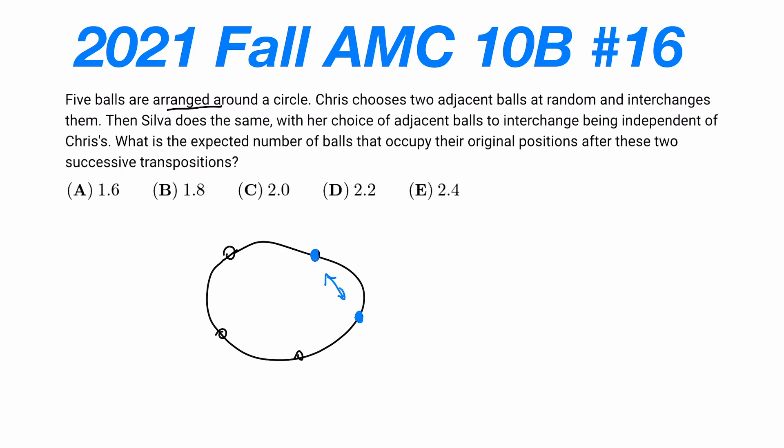Then Silva does the same, with her choice of adjacent balls to interchange being independent of Chris's. What is the expected number of balls that will occupy their original positions? Well, let's say if we choose this, then what is the expected number?